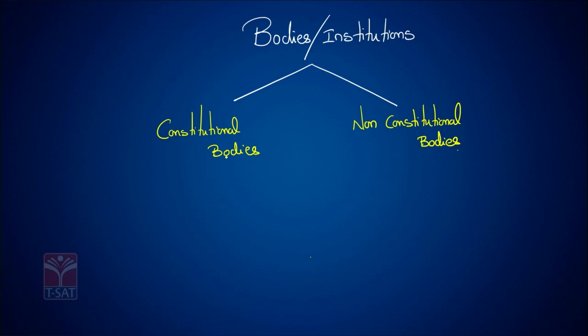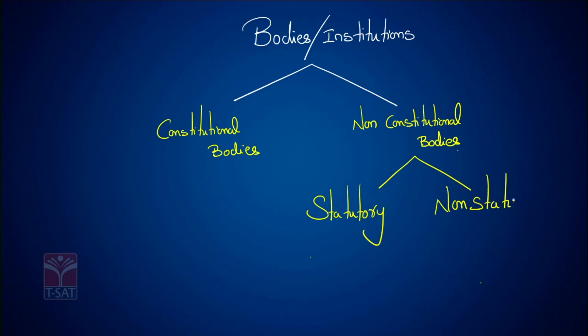Constitutional bodies and non-constitutional bodies — we know there are two types of institutions. Non-constitutional bodies are further divided into two types: the first one is statutory bodies, and the second one is non-statutory bodies.